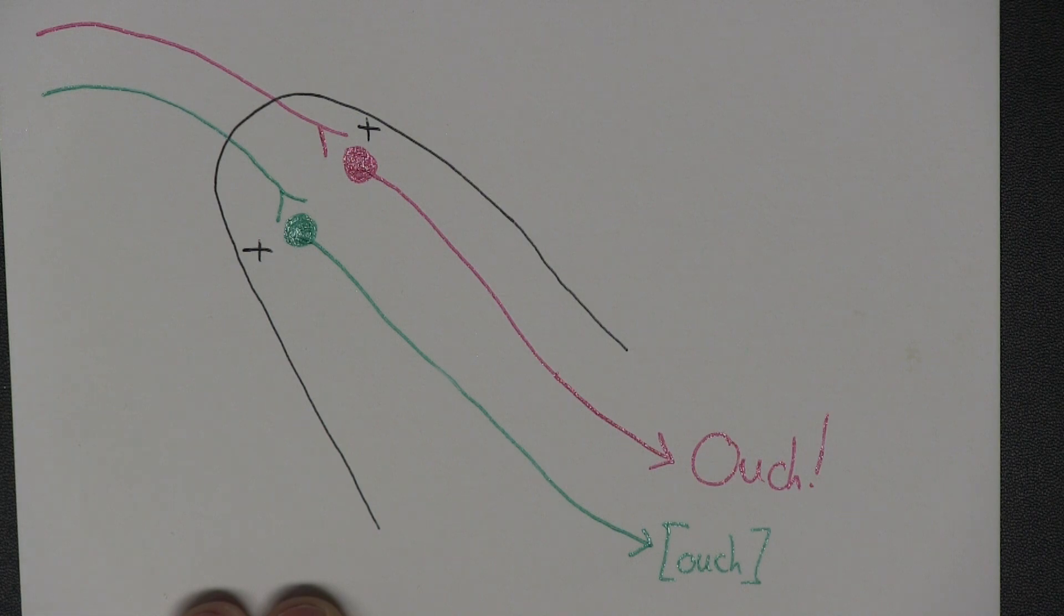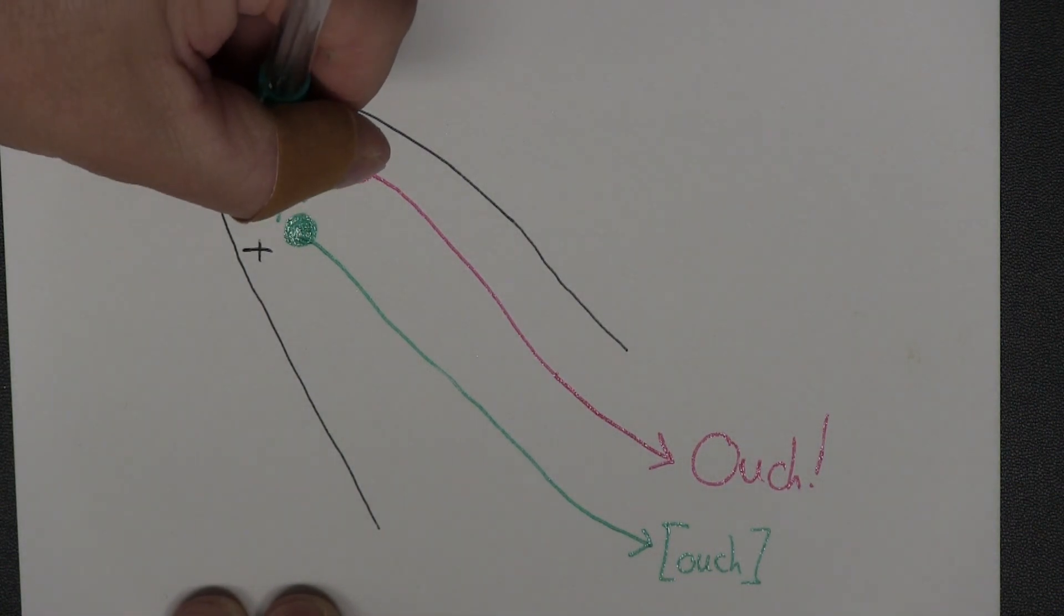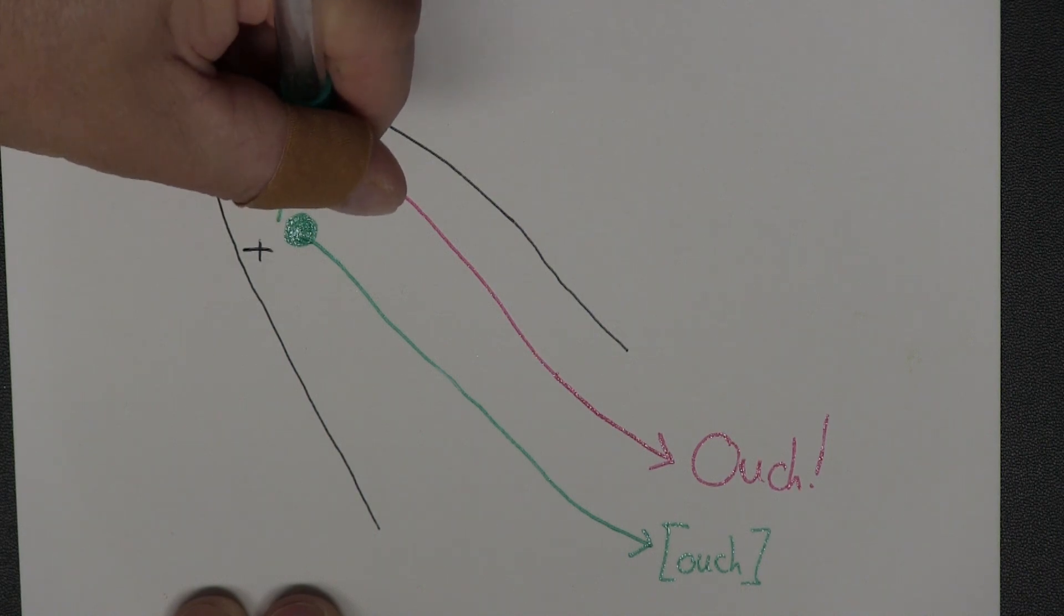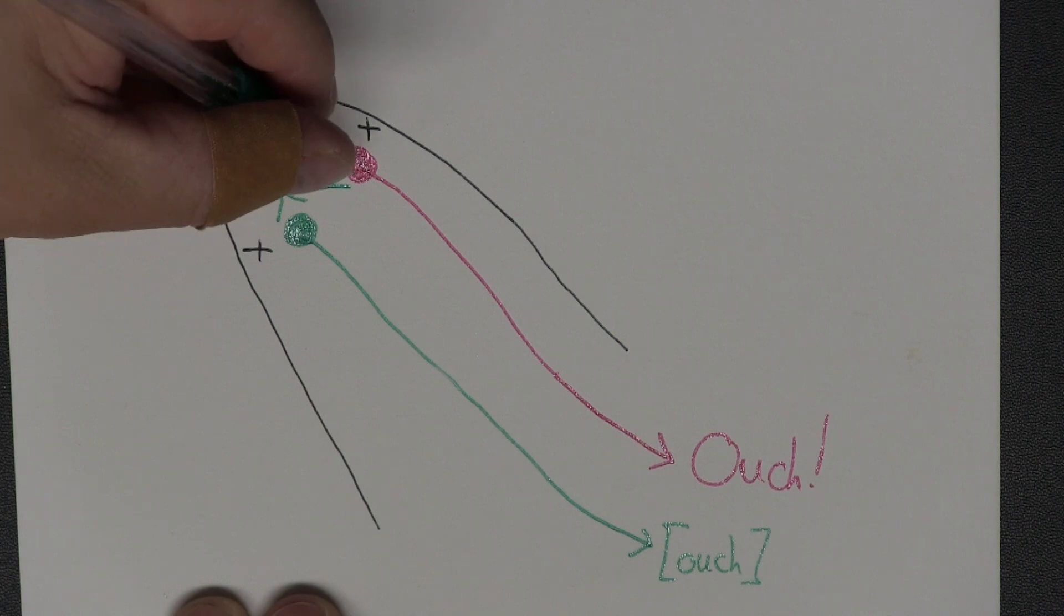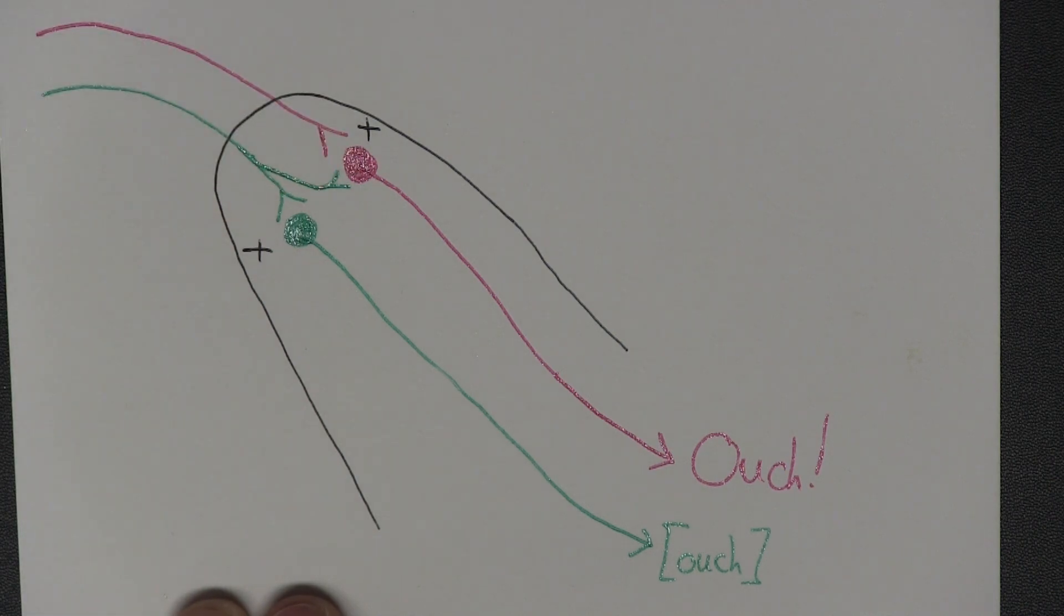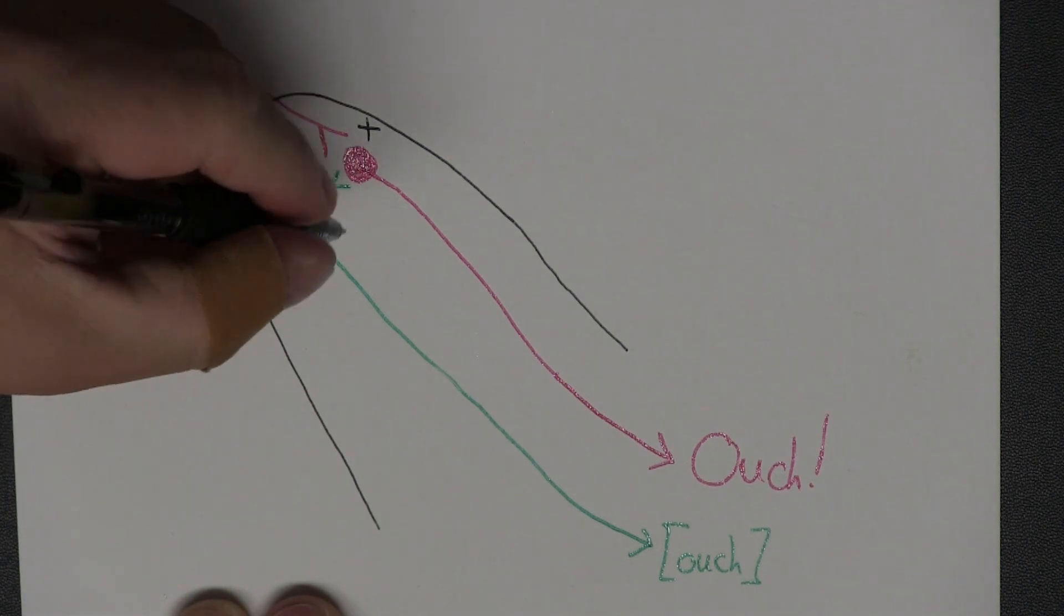Now, if that was it, again, we wouldn't have any real way to know that the organs are in trouble. But thankfully, some collateral axons jump off of these visceral fibers and make some diffuse occasional branches over to the second-order somatic neurons, and they will stimulate them.